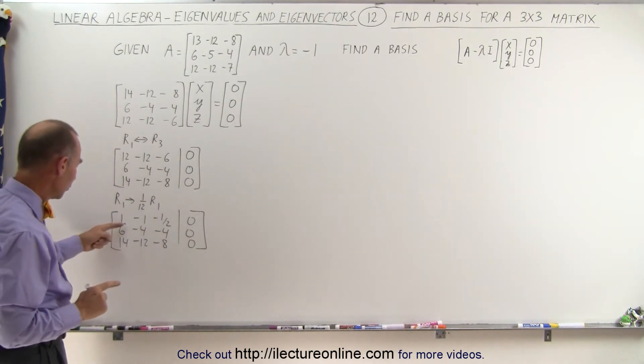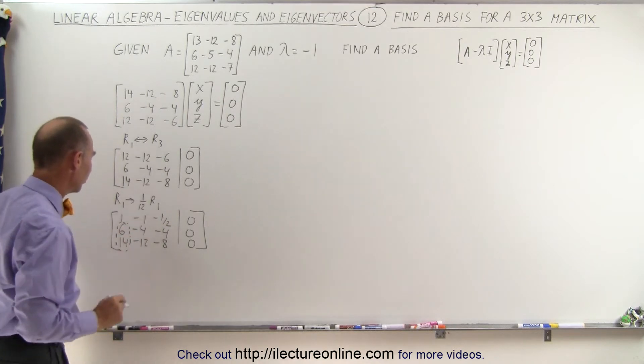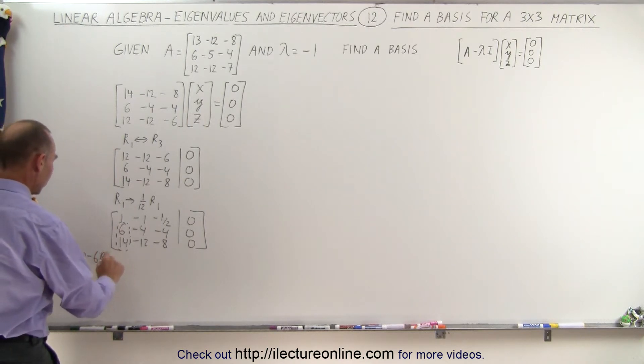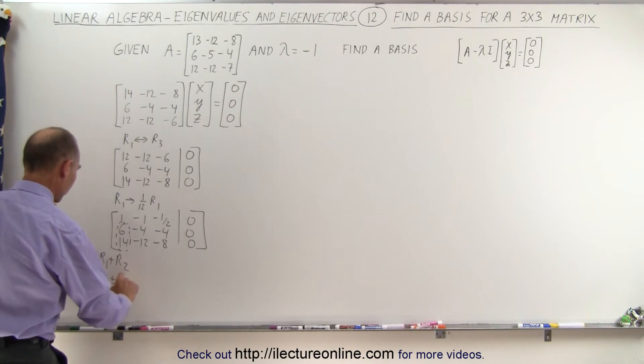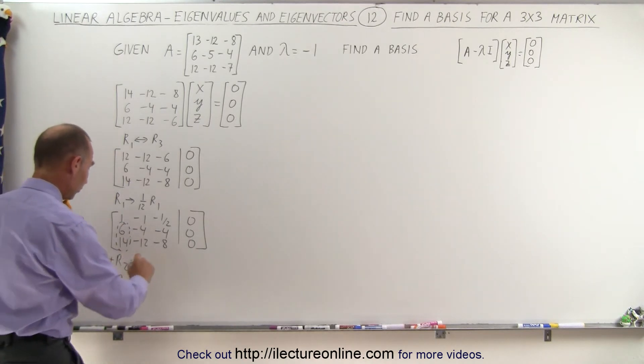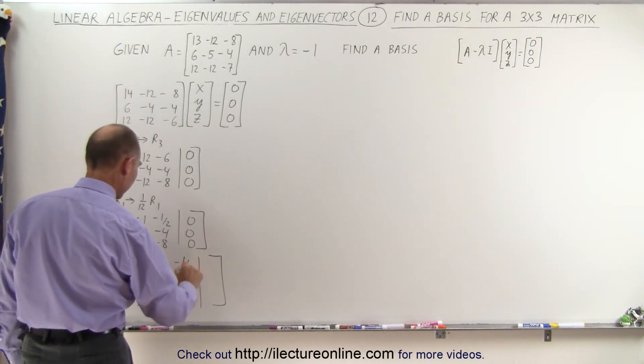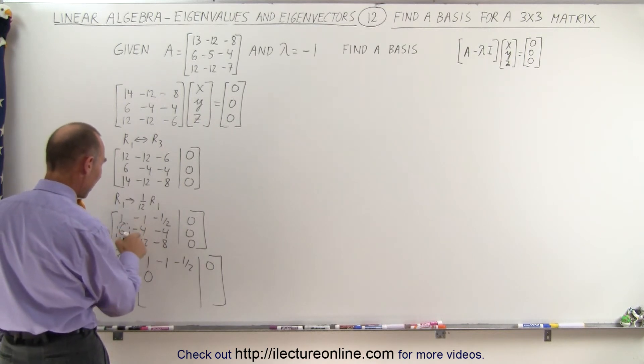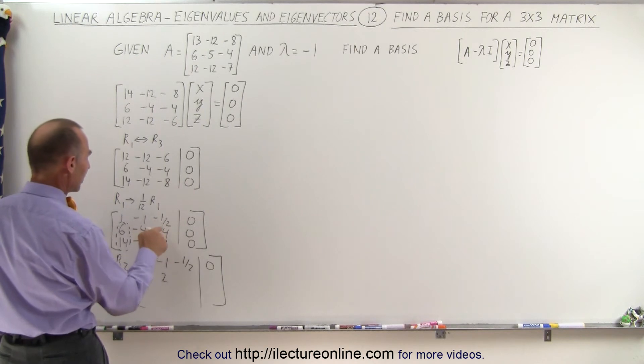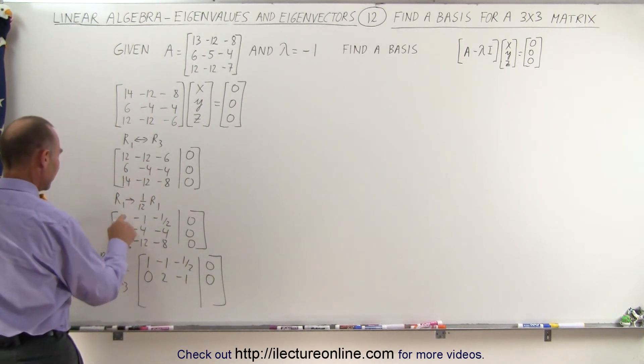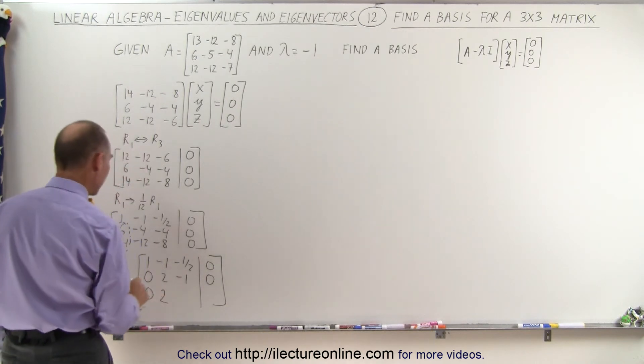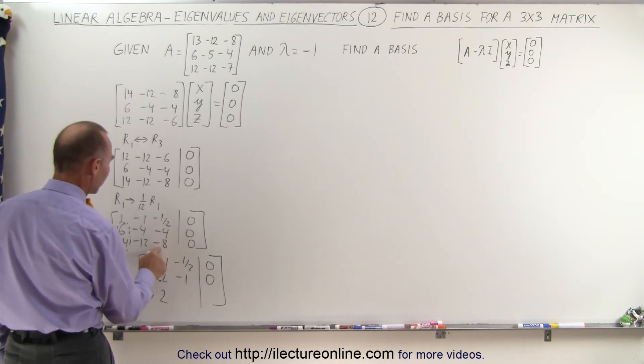Next, what we're going to do is we're going to turn these two into zeros. We can do that by taking row 2 and replacing it by negative 6 times row 1 plus row 2, and row 3 can be written as the negative of that number, 14 times row 1 added to row 3. When we do that, these two elements will become zeros. The first row doesn't change. 1, negative 1, negative 1 half, and 0. So we have negative 6 times 1 added to that gives us 0. Negative 6 times a minus 1 is a plus 6, added to negative 4 is a plus 2. Negative 6 times this is 3, added to negative 4 is minus 1, and that gives us 0. Here, negative 14 times this added to 14 is 0. Negative 14 times this is a positive 14, added to negative 12 is a positive 2. And negative 14 times this is a positive 7, added to negative 8 is a negative 1.